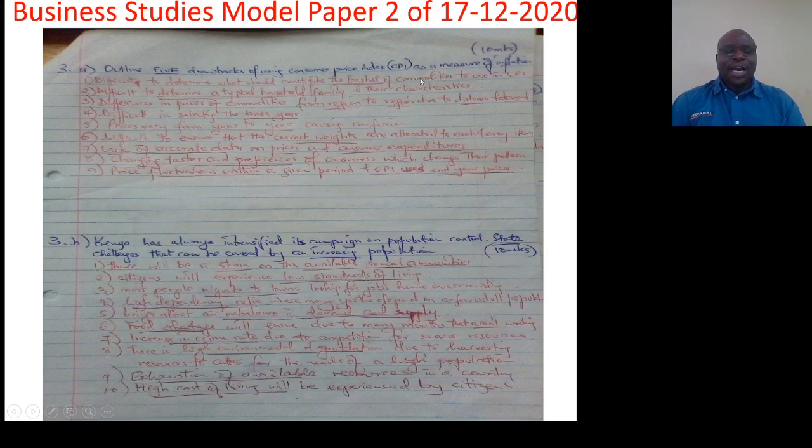So in a country, we may decide that we will take a few items. But which are those items? Mostly, those items are those that are bought in large quantities and that are bought by many people. But which ones? In one region, you may find that this item is taken by a lot of people as opposed to another region. So there's difficulty in what will constitute the commodities to use in computation of CPI. Two, difficulty to determine a typical household or family and their characteristics. So one family or families in a certain region may have similar characteristics, but different characteristics from families in another region.